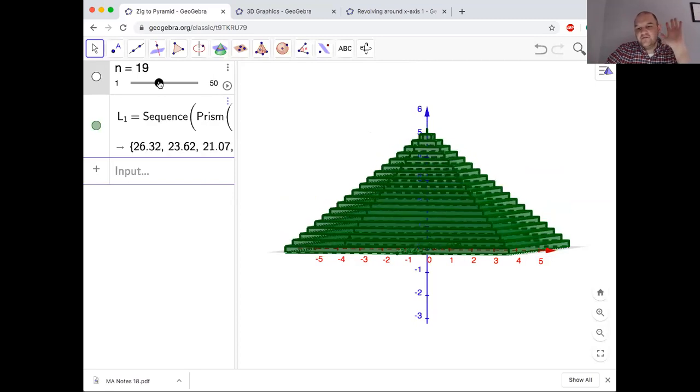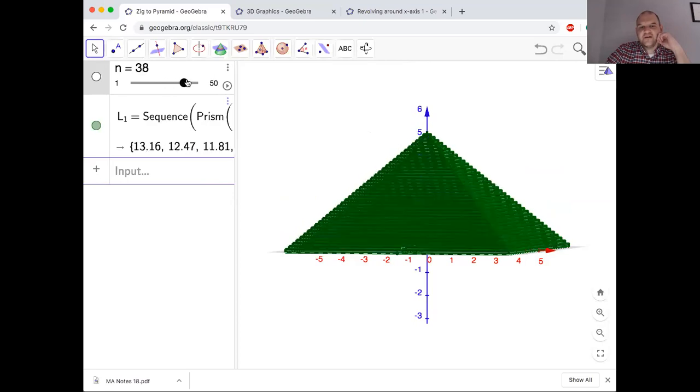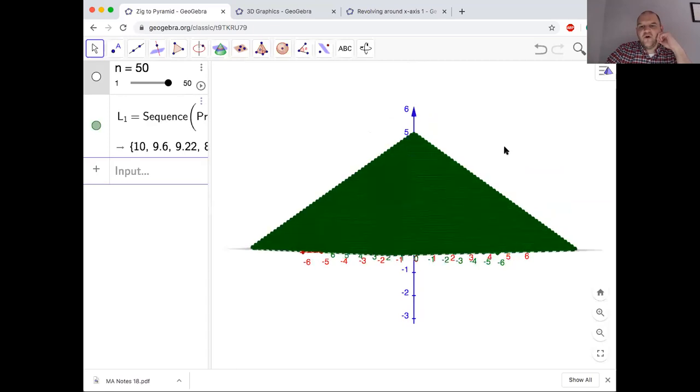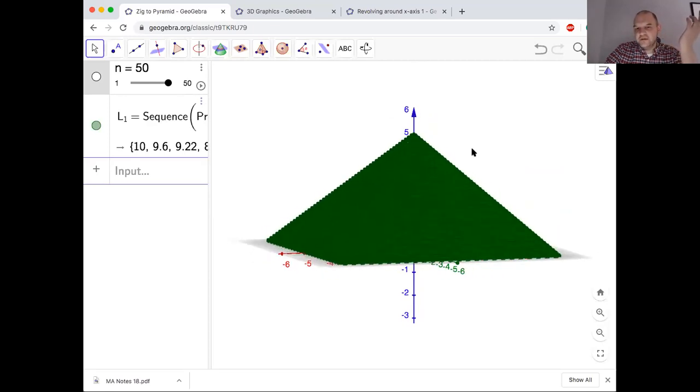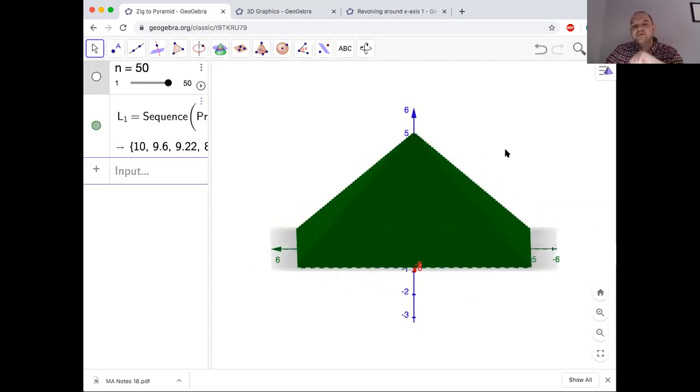If I kept going it would look more and more like a pyramid, always using the same height of five. We're up to 28 layers—let's go to 50 layers. Here's 50 layers, almost indistinguishable from a pyramid. To approximate the volume of this pyramid, I would just need to find the volume of each of those layers. But what are each of those layers?